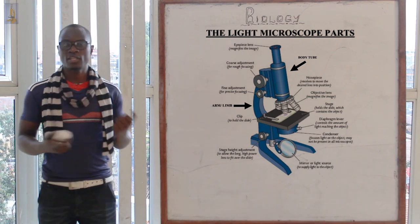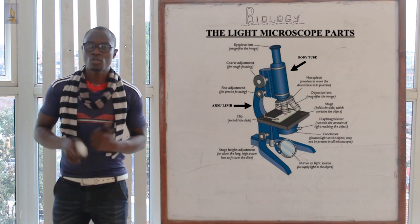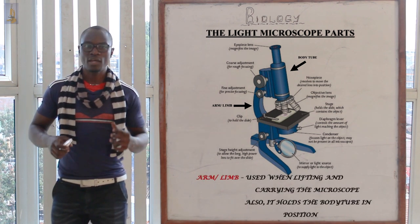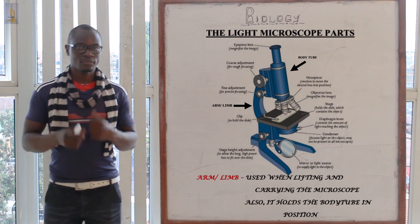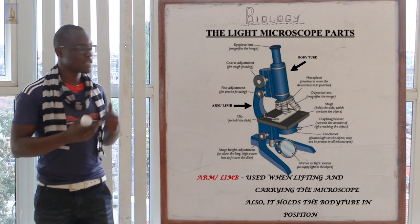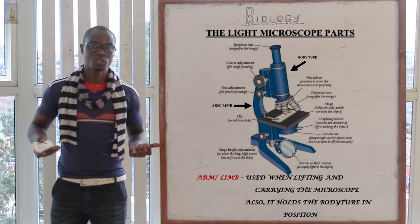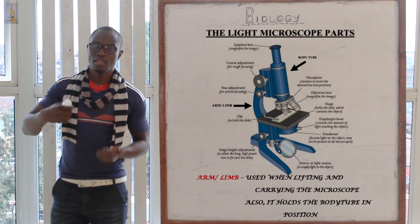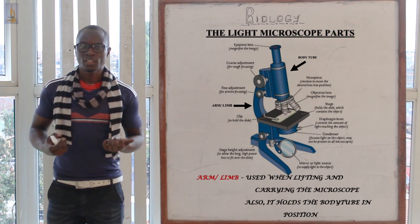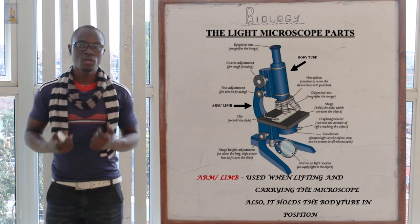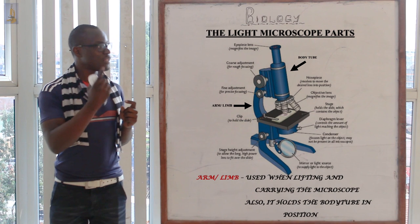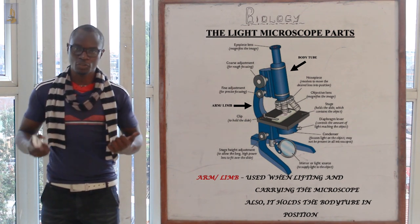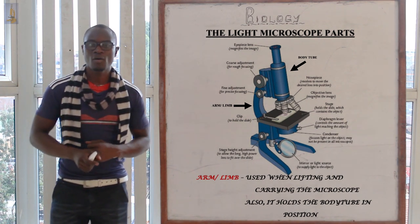The arm or limb is used to carry the microscope and also supports or holds the body tube in position. Just like we hold a thermos by its arm at home, the microscope arm serves the same purpose.